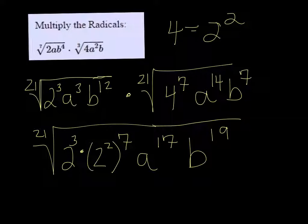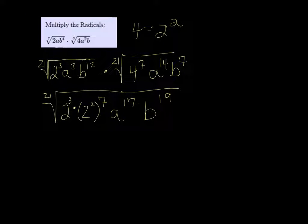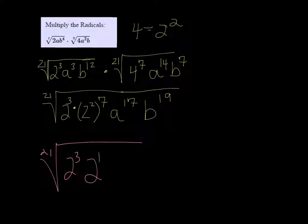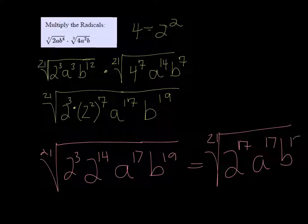So this 2 squared to the 7th can be simplified. We're going to have the 21st root of 2 cubed. This is going to be 2 to the 14th power. Now I can put all of the 2's together, and I'm going to get the 21st root of 2 to the 17th, a to the 17th, and b to the 19th.